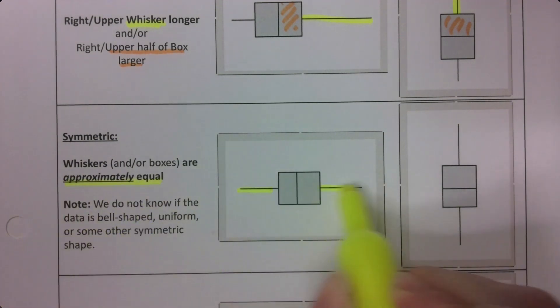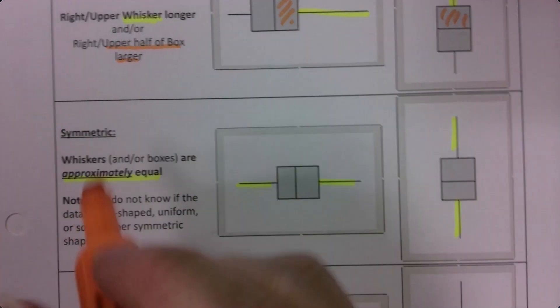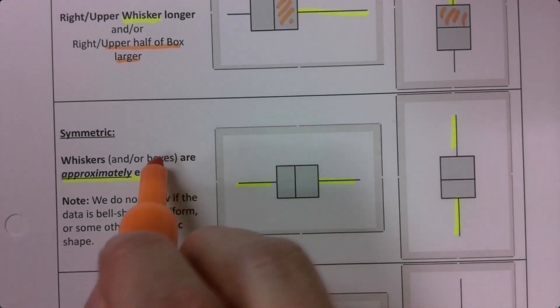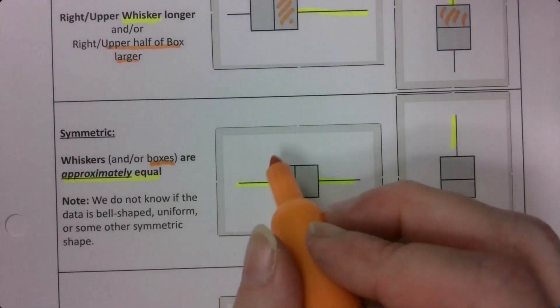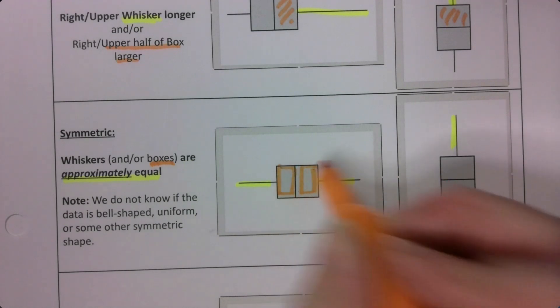The left side and the right side are mostly the same. Or the boxes are mostly the same-ish. This isn't a perfect thing.